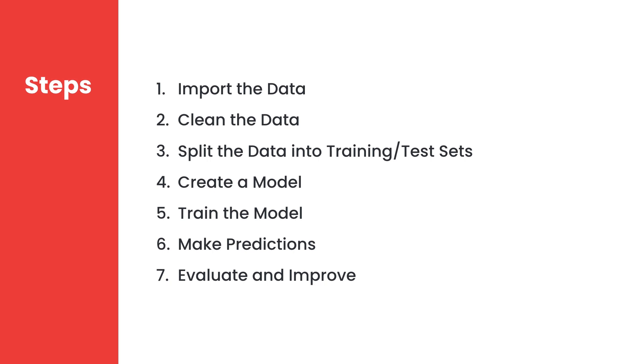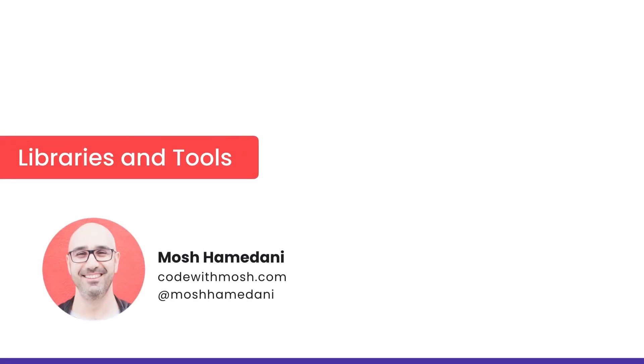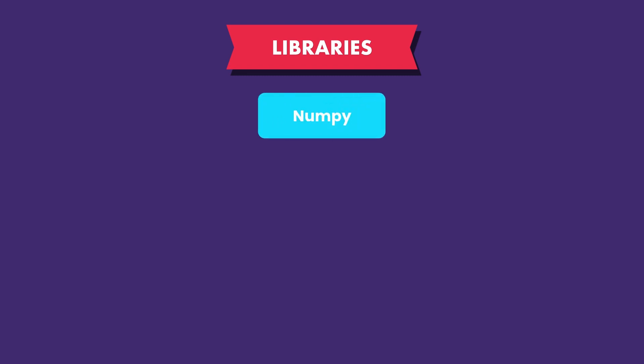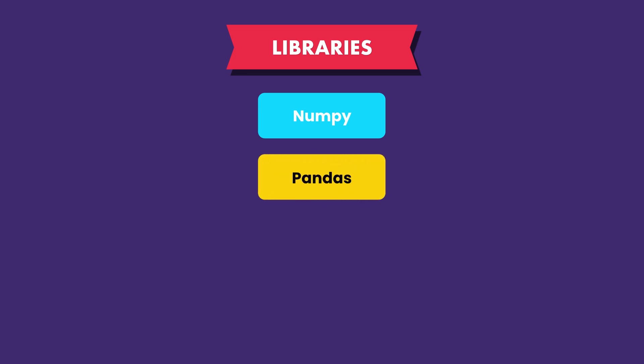Next we'll look at the libraries and tools for machine learning. The first popular Python library is numpy, which provides a multi-dimensional array. The second is pandas, a data analysis library that provides a concept called a data frame — a two-dimensional data structure similar to an Excel spreadsheet with rows and columns. Both are very popular in machine learning and data science projects.